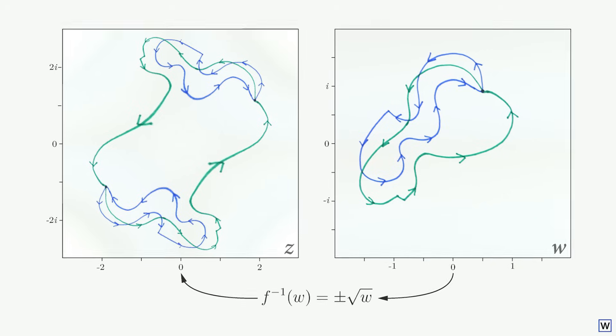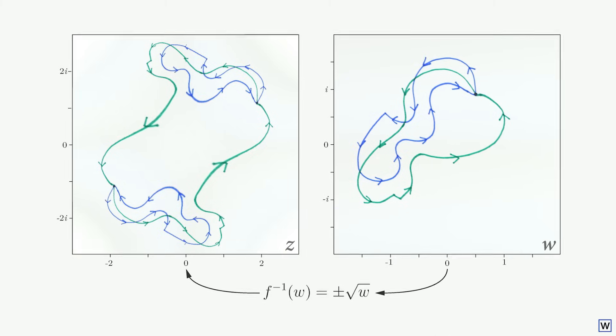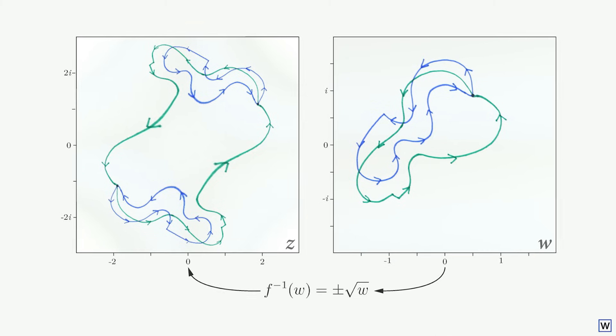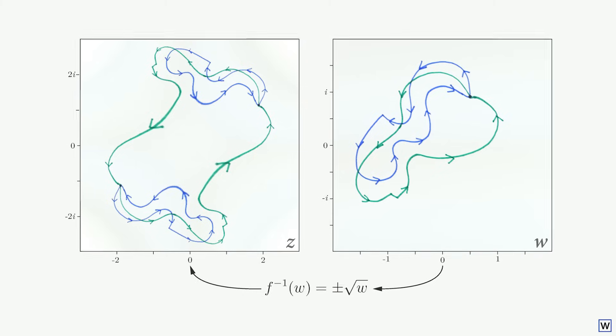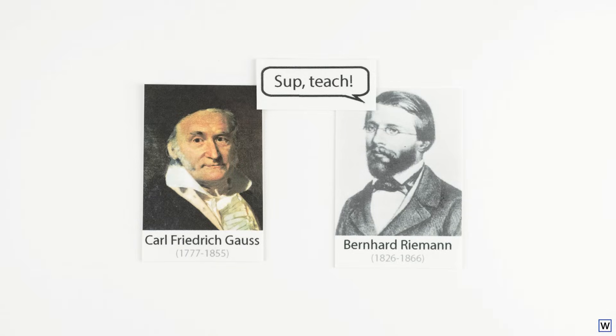One reason I like math is that for many problems, someone much smarter than me has already given them some serious thought, and quite often found an elegant solution. In this case, that person was one of Gauss's students, Bernhard Riemann. We'll discuss his solution next time.